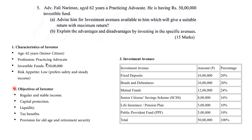So that covers steps 1, 2, and 3: characteristics, objectives, and investment avenues. The amount allocated to each avenue can be varied — you can distribute the 50 lakh budget in any reasonable way. You can go through the first 3 steps first.